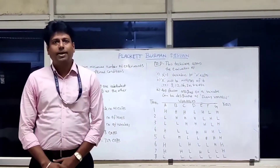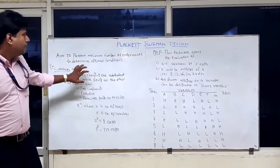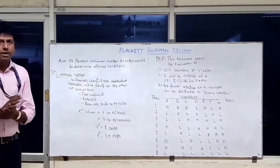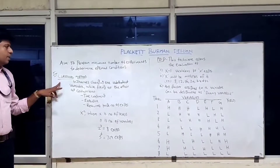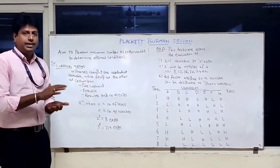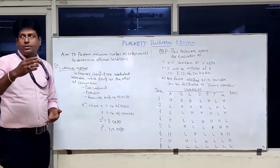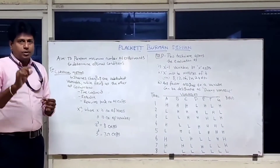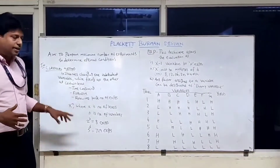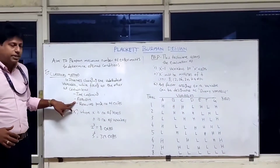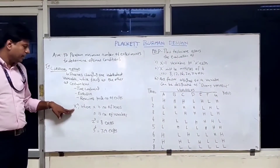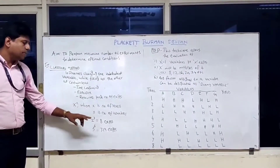Today we are going to discuss about the Plackett-Burman design to optimize the medium. The aim of this experiment is to perform the minimum number of experiments to determine the optimal conditions. In the classical method, we change one independent variable while fixing all others at a certain level.